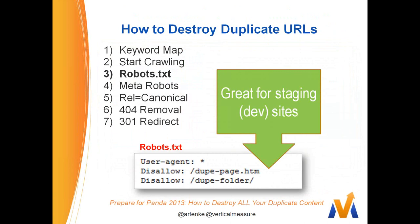Robots.txt is a great step. If you've got a site in the dev stage or a staging site, the robots.txt file is a great way to block entire folders. However, it's not very effective once your site is already indexed — if Google has already crawled your dev site, it's not a great tool to go after at that point. You have to do some other things, which we'll talk about.